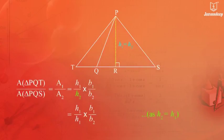As H2 equals H1, H2 can be replaced by H1. So, H1 upon H1 multiplied by B1 upon B2.